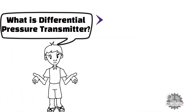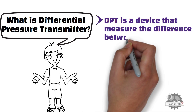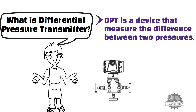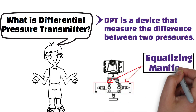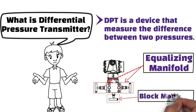A Differential Pressure Transmitter is a device that measures the difference between two pressures. It has three manifolds. Two manifolds are equalizing manifolds, and they remain open during normal operation. The third is a block manifold, and it remains closed during normal operation.